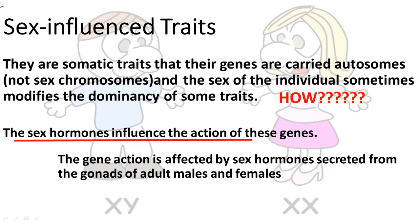The gene action is affected by sex hormones secreted from the gonads of adult males or females. Before puberty, both males and females don't express these traits. They are expressed only after puberty, because sex hormones are secreted in high levels after puberty.